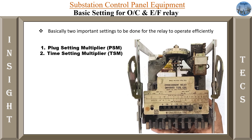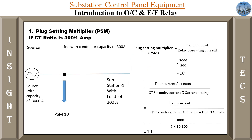We have already seen how the plug setting multiplier is done. The calculation for plug setting multiplier is fault current divided by relay operating current. In order to calculate the PSM, we should know what is the fault current and what is the relay operating current. This PSM is basically dependent mainly upon the CT ratio.